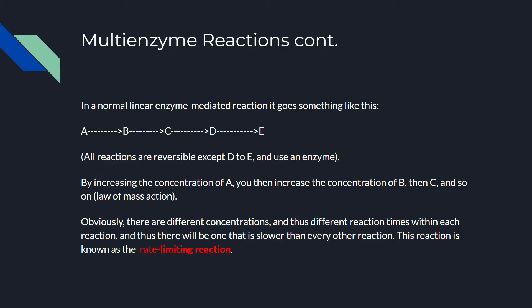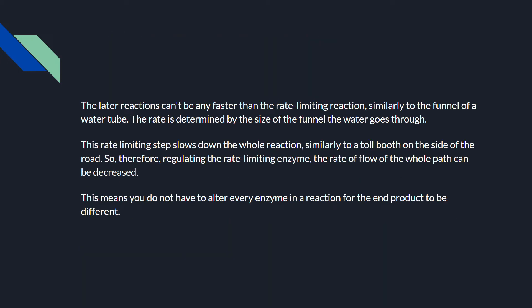There are different concentrations and therefore different reaction times within each reaction, so there will be one reaction that is slower than every other — this is known as the rate-limiting reaction, because it slows down everything. The later reactions can't be any faster than the rate-limiting reaction, similar to the final level of a water tube where the rate is determined by how much water can flow through. This rate-limiting step slows down the entire reaction, similarly to a toll booth on a road. By regulating the rate-limiting enzyme, the rate of flow of the whole pathway can be controlled, meaning you don't have to alter every enzyme — just the rate-limiting one.